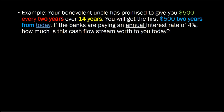Let's go back to our rich and benevolent uncle, who has promised to give you $500. But instead of giving it every year, he says he's going to give it every two years, over the next 14 years, with the first $500 starting two years from today. So what would the timeline look like in this case?